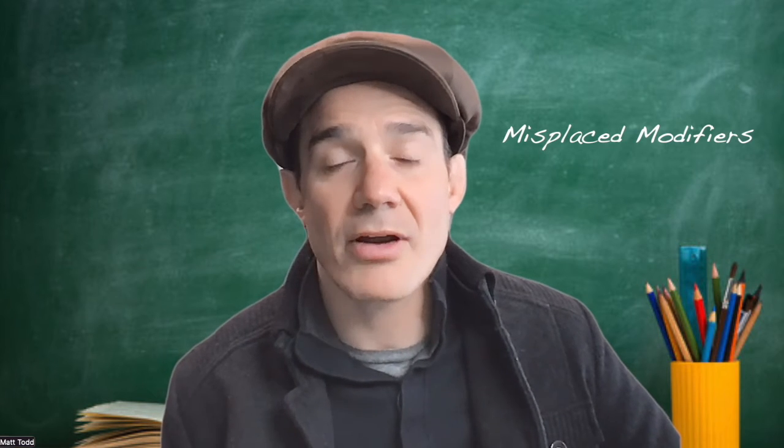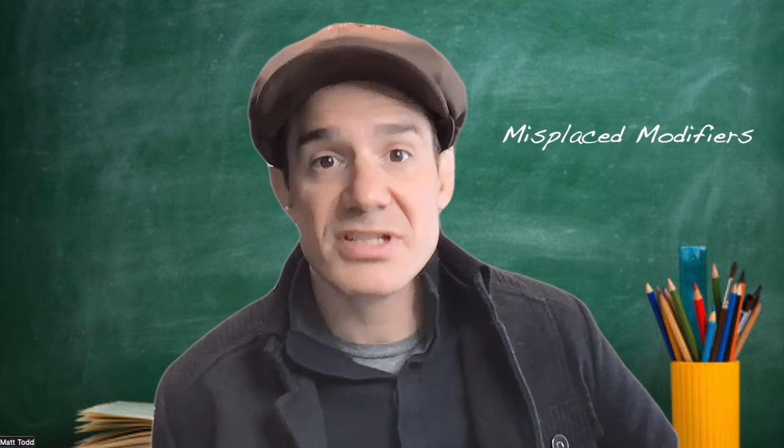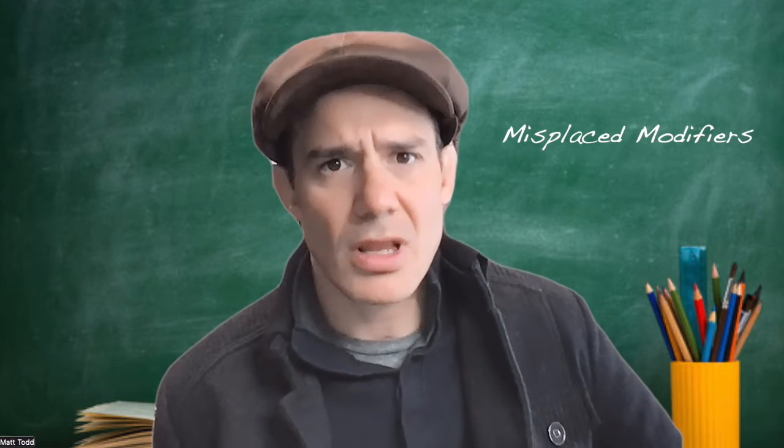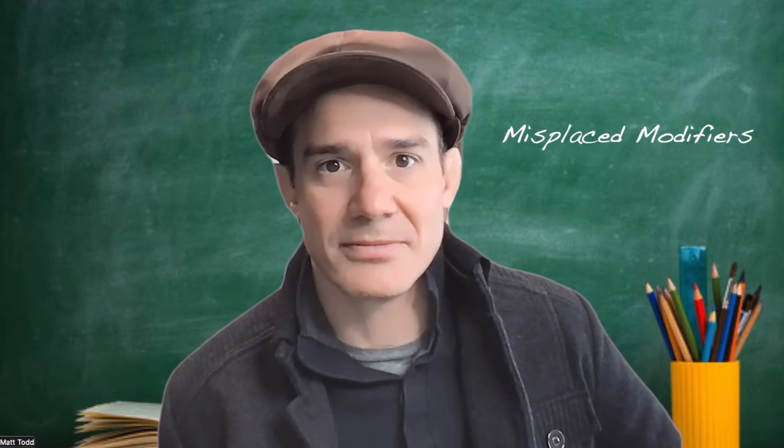A misplaced modifier is when you have a descriptive word or phrase that is not next to what it should be. The modifier is always the describing word or phrase. So if I say, 'sitting in my chair, I am studying for a test,' who's sitting in the chair? Well, I am. But if I said, 'sitting in my chair studying for a test, my dog started really bothering me,' it would sound like my dog was sitting in the chair studying for the test, which is not accurate.